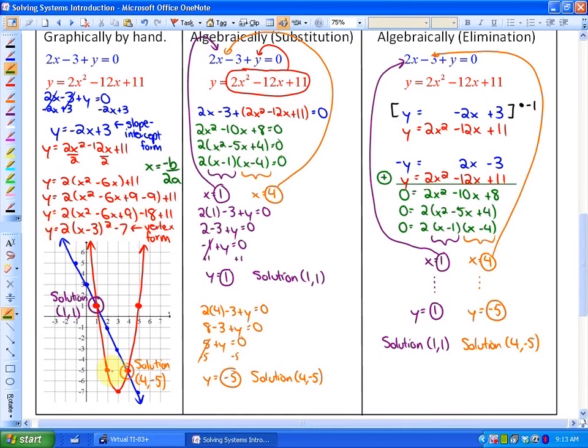So you'd get the exact same vertex as we have here. So vertex form, the vertex is at 3, negative 7. And with a multiplier of 2 here, it has been stretched by a factor of 2. And in this method, we can see our solutions visually. It's at the point 1, 1. That's a solution to this system. And at the point 4, negative 5, which is another solution to this system.